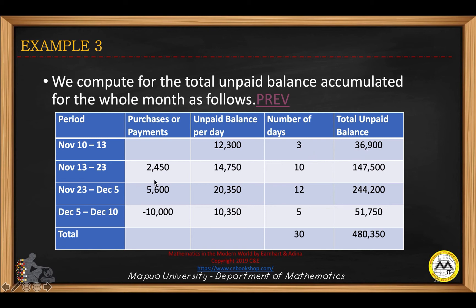A purchase is made on November 23, which is $5,600. The total period for November 13 to 23 will be 10 days. This will be added to the previous balance, giving $14,750. Multiplied by 10, that will be $147,500.